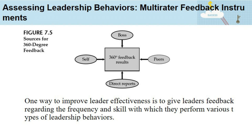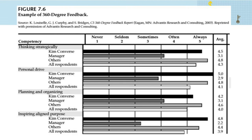One way to improve leader effectiveness is to give the leader feedback regarding the frequency and skill with which they perform various types of leadership behaviors. There is a technique named 360-degree feedback, where the resource comes from the boss, peers, direct reports, and even themselves. A key question is: what should a leadership practitioner take away from this 360-degree feedback research? First, given the popularity of the technique, it is likely that a leader will receive 360-degree feedback at some point in their career. Second, 360-degree feedback should be built around a competency model, which will describe the leadership behaviors needed to achieve organizational goals.